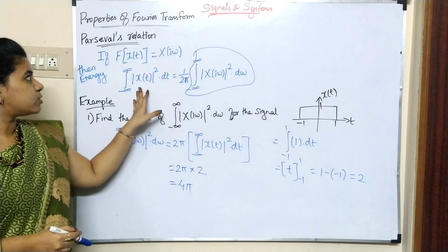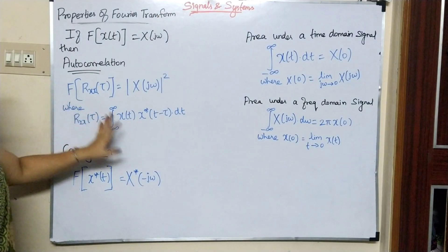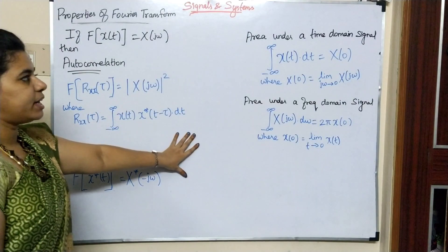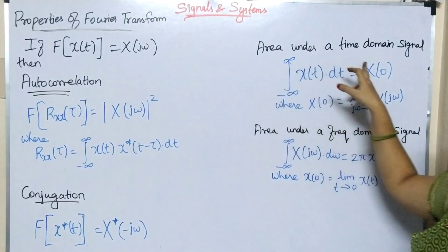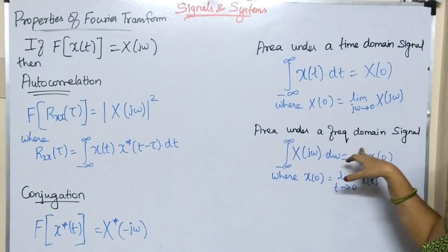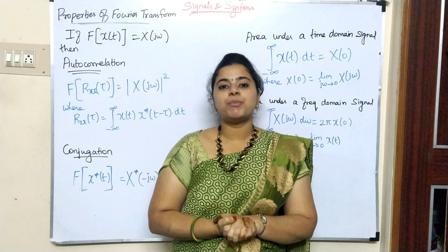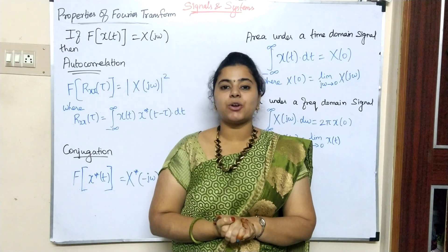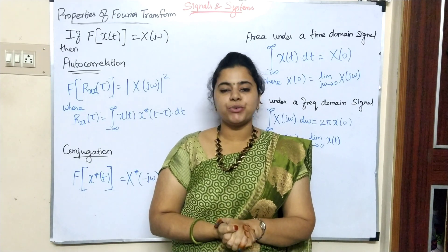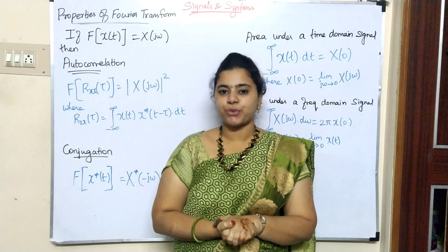This is how you use Parseval's relations. The remaining properties to note are Autocorrelation, Conjugation, Area under a Time Domain Signal, and Area under a Frequency Domain Signal. Fourier transform properties are all covered. In the next class we will discuss another topic. Thanks for watching this video. If you like this video, subscribe to my channel and share it with your friends.